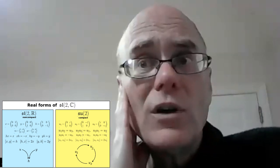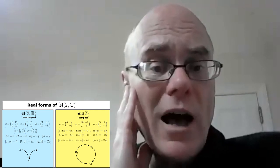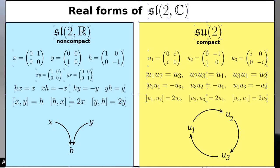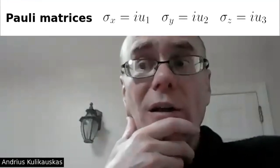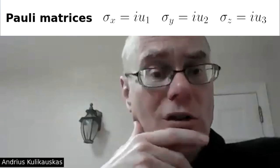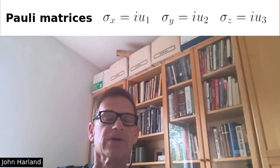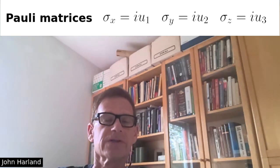SL2 is the thing that's relevant when you do the classification of Lie groups, Lie algebras, and Lie theory — you work with SL2, and it can have various real forms. Complex SL2 would have two real forms: one is the real SL2 over the reals, and the other would be SU2, which is compact. SU2, if I have it correctly, is generated by the Pauli matrices — or rather, by the corresponding Lie algebra.